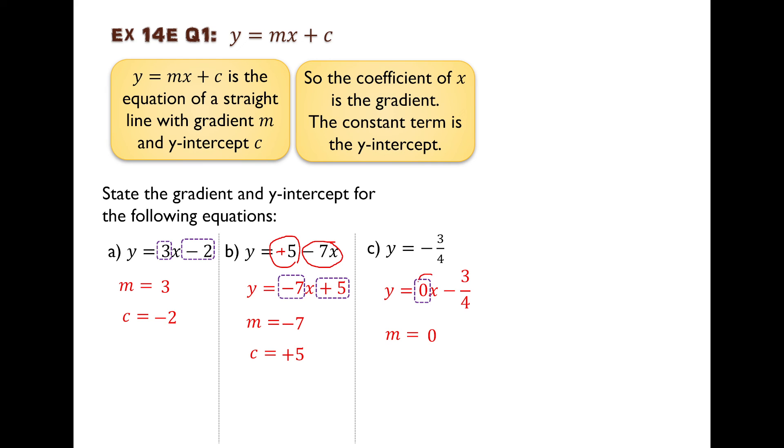So there's one term there. The constant term is the term that does not contain an x or a letter. The constant term, which is the y-intercept, c, is this one: negative 3 over 4. So now I've got my gradient and my y-intercept.